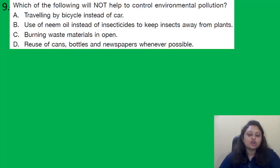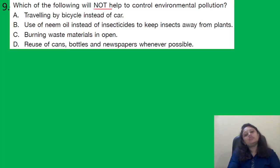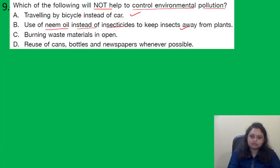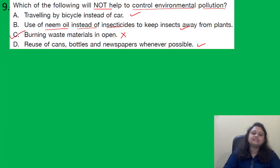Next question: Which of the following will NOT help to control environmental pollution? Options: A — travelling by bicycle instead of car; B — use of neem oil instead of insecticides; C — burning waste material in open; D — reuse of cans, bottles, and newspaper wherever possible. Travelling by bicycle, using neem oil, and reusing materials all help control pollution. Burning waste material in the open will not help — it will increase pollution. So the correct answer is option C.